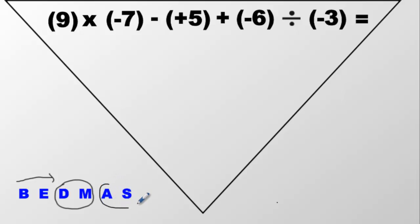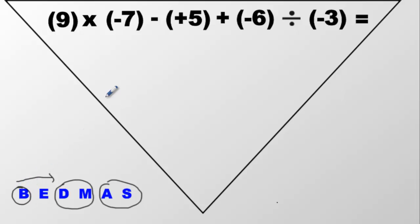Likewise, once you get to addition and subtraction, and all the division and multiplication have been solved, whichever one comes first between these two, you solve in that order. Now, we have to start with brackets. Are there any brackets? Yes, there are many brackets in this equation — there are five sets of brackets.